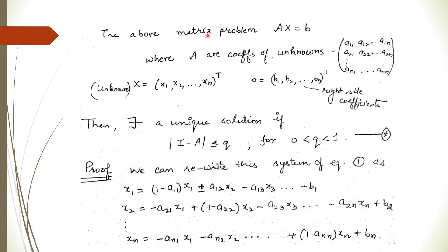The above matrix problem can be written as Ax = b, where A contains the coefficients of the unknowns, b contains the right-hand side coefficients, and x contains the unknowns. This system has a solution — moreover, a unique solution — if the determinant of (I - A), where I is the identity matrix of the same order as A, is less than or equal to q, where q is a number between 0 and 1.